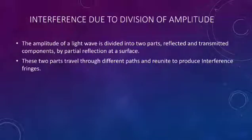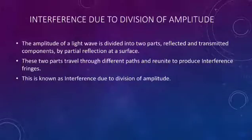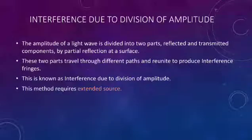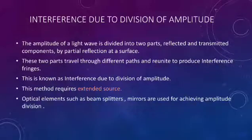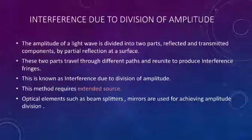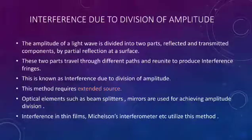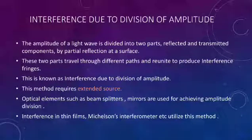In division of amplitude, the two parts are the reflected and transmitted components produced by partial reflection at a surface. These two parts travel through different paths and reunite to produce interference fringes. This is known as interference due to division of amplitude. This method requires an extended source. One example is interference in thin films.